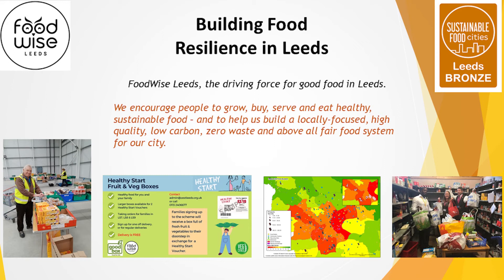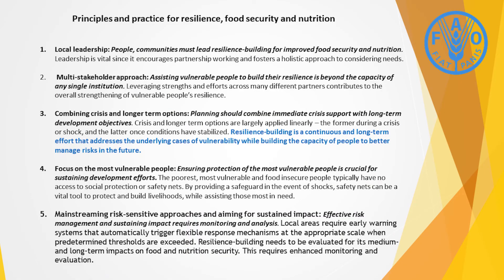Everybody has worked fantastically over the past year to come together for this incredible response and now it's about what we do next — how do we move on, how do we continue to work and support people. We've got here some principles and practices for resilience, food security and nutrition as laid out by the United Nations Food and Agricultural Organization. Although designed for crises and famines, the principles work very well here in Britain at this time. What's really important is local leadership, working with the communities, and a multi-stakeholder approach — working with different partners across the city in different ways, combining crisis and longer-term options while always maintaining that safety net for people in absolute crisis.